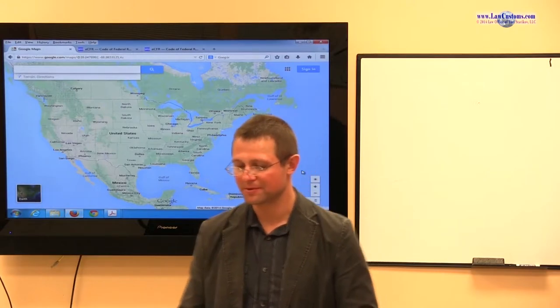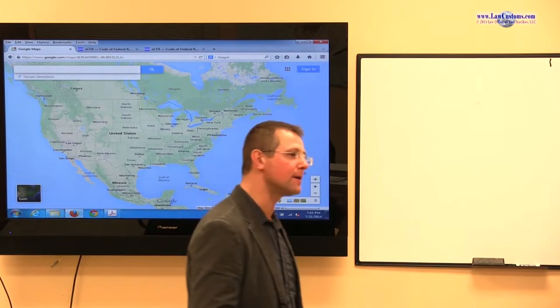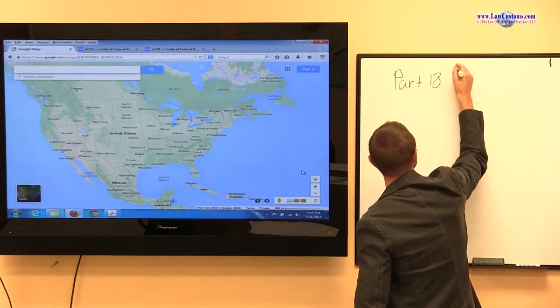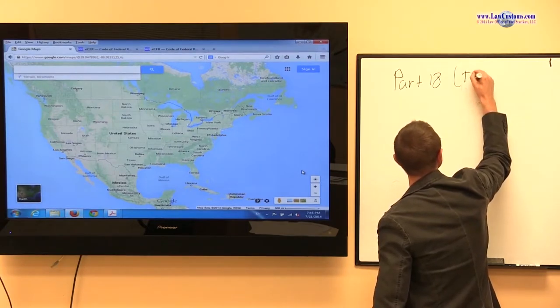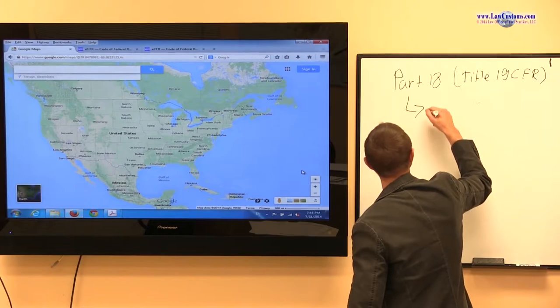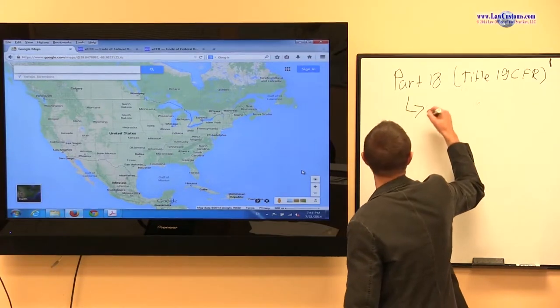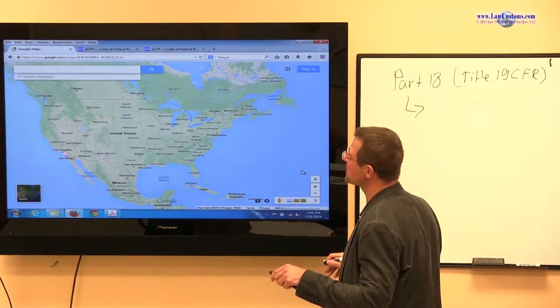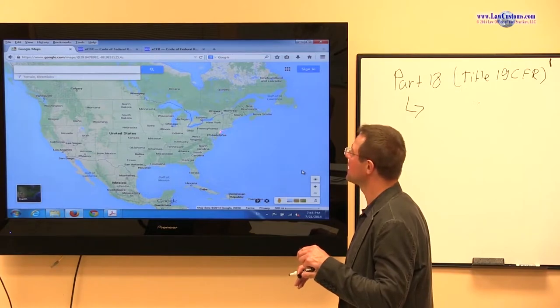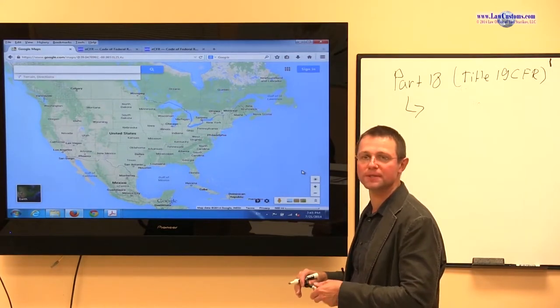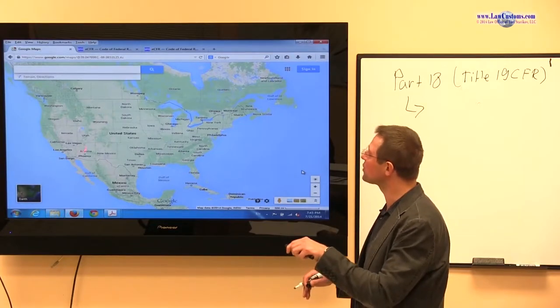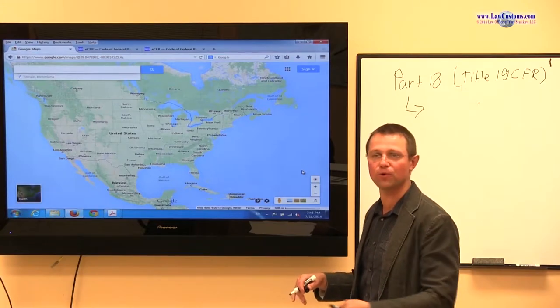Transportation in bond, Part 18, Title 19 Code of Federal Regulations, focuses on the rules that guide this type of procedure where you bring it in one port of the United States, deliver it to another port, and clear customs there. They provide rules for what happens in between before you clear customs. You enter the United States but have not started your regular entry process like entry for consumption or entry for warehouse.